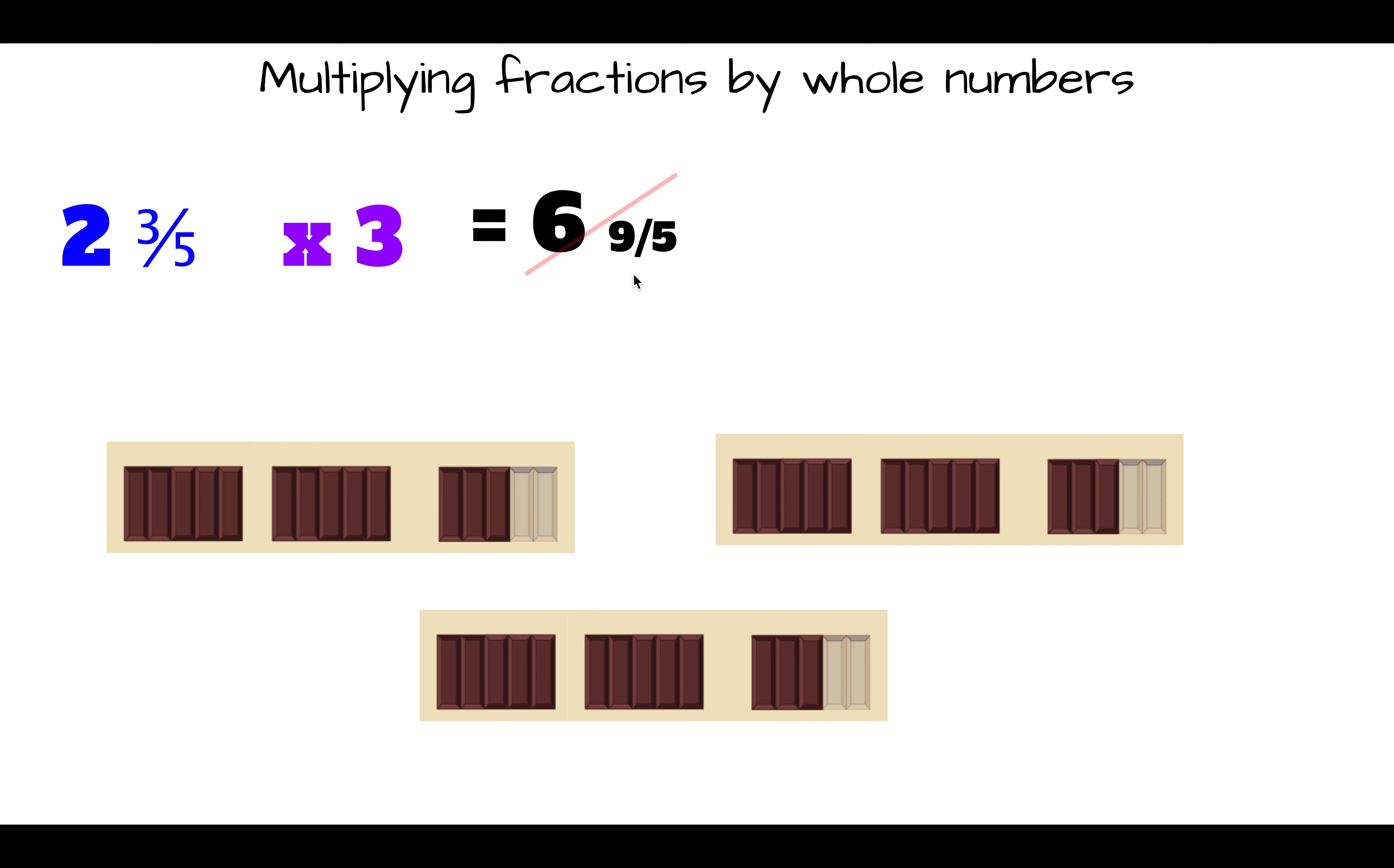But looking at this again, I think that I can actually make another whole bar of chocolate with my fifths. So I'm going to take these two fifths here and add them over here to make another bar. So now I have seven whole bars of chocolate and one, two, three, four fifths.